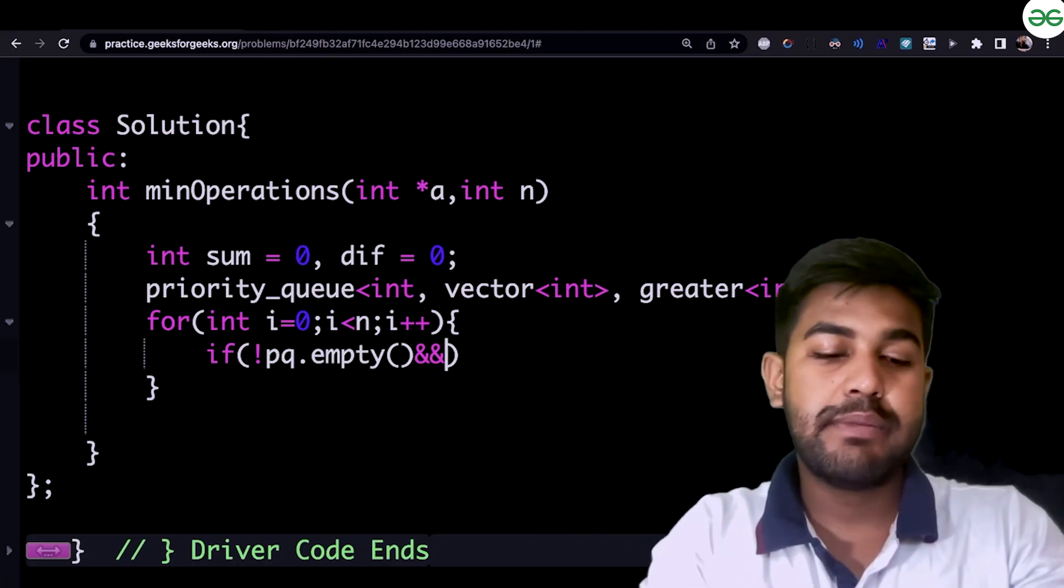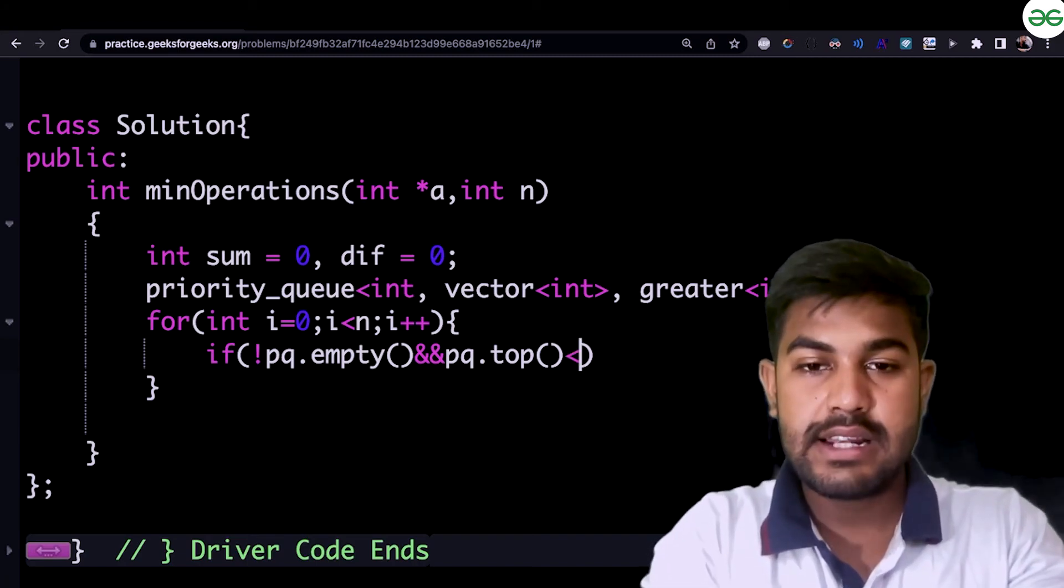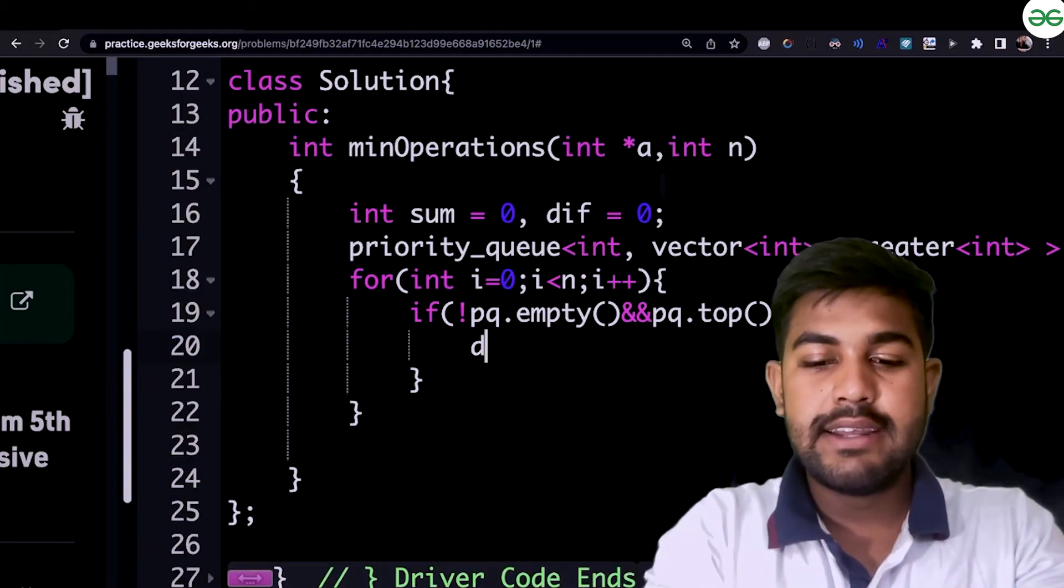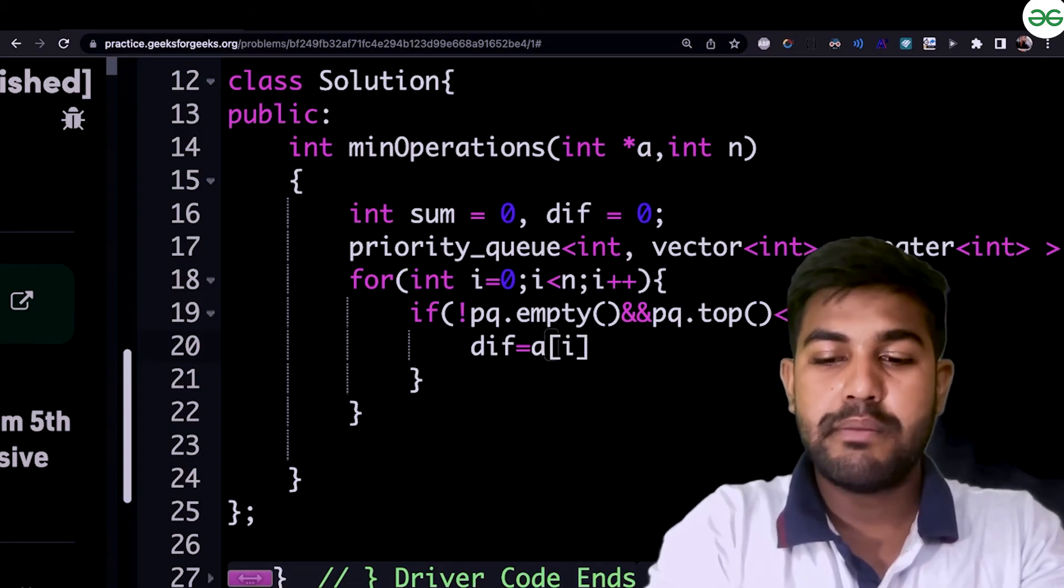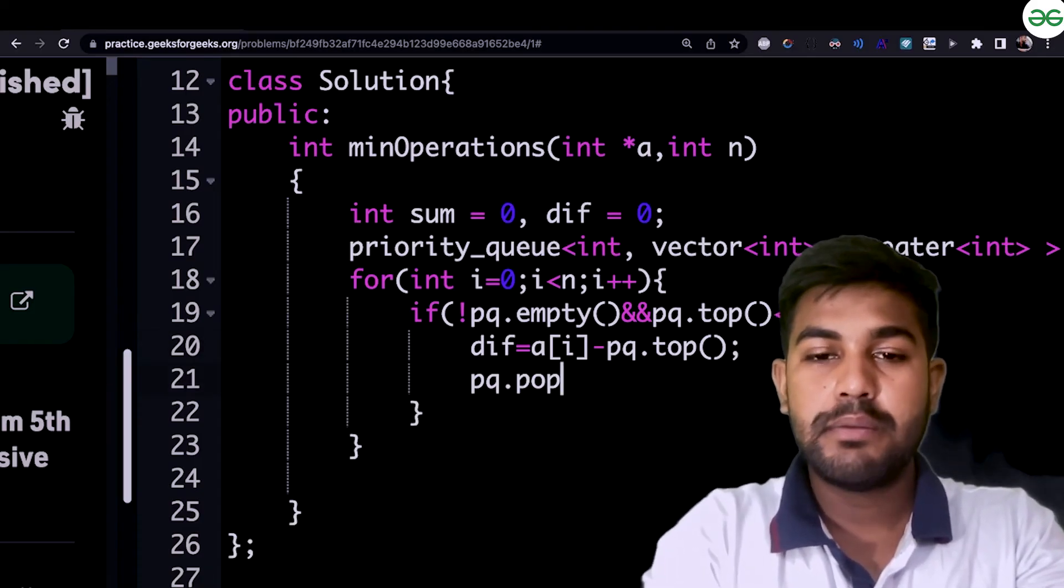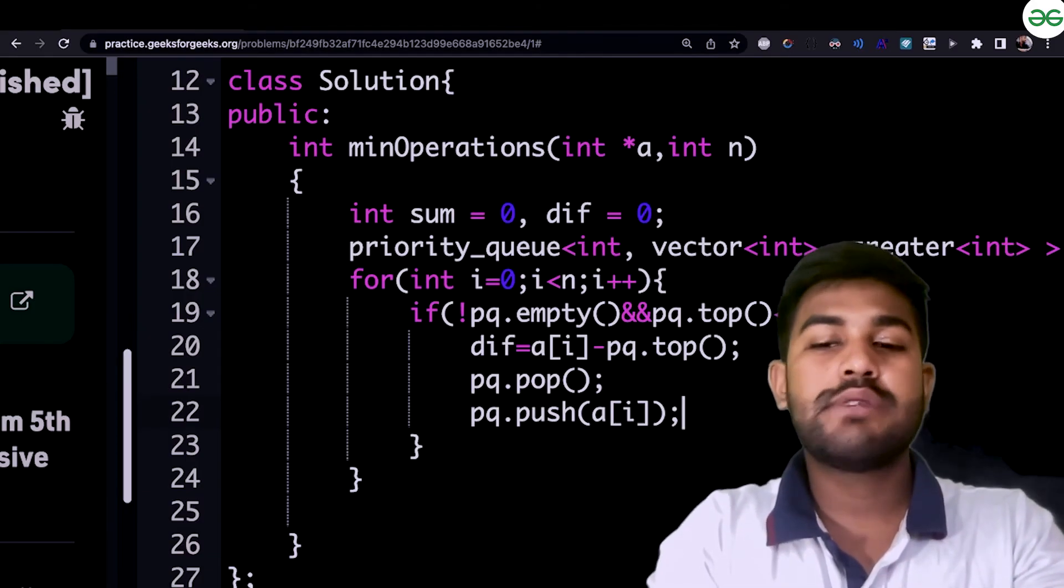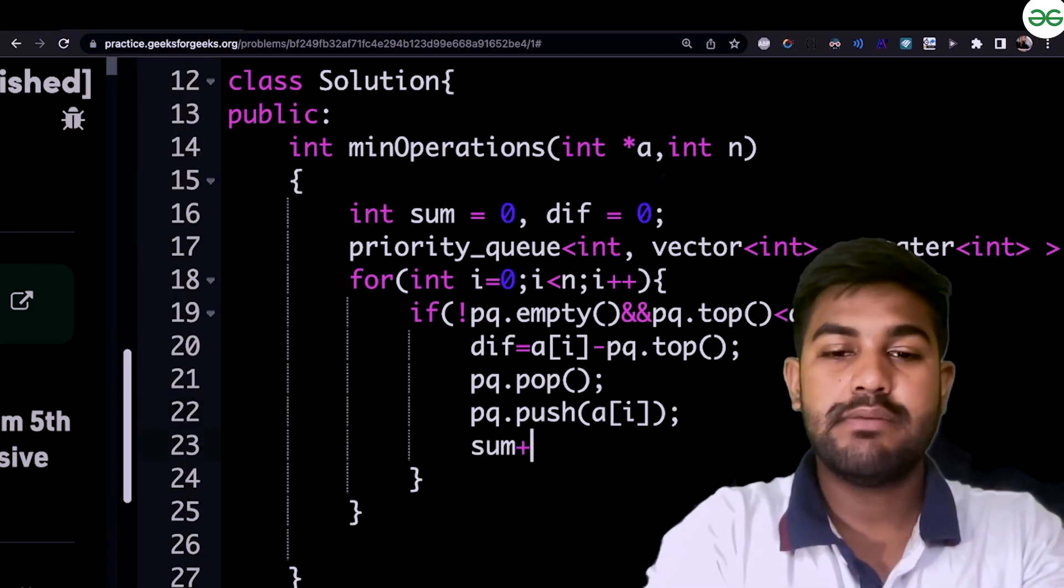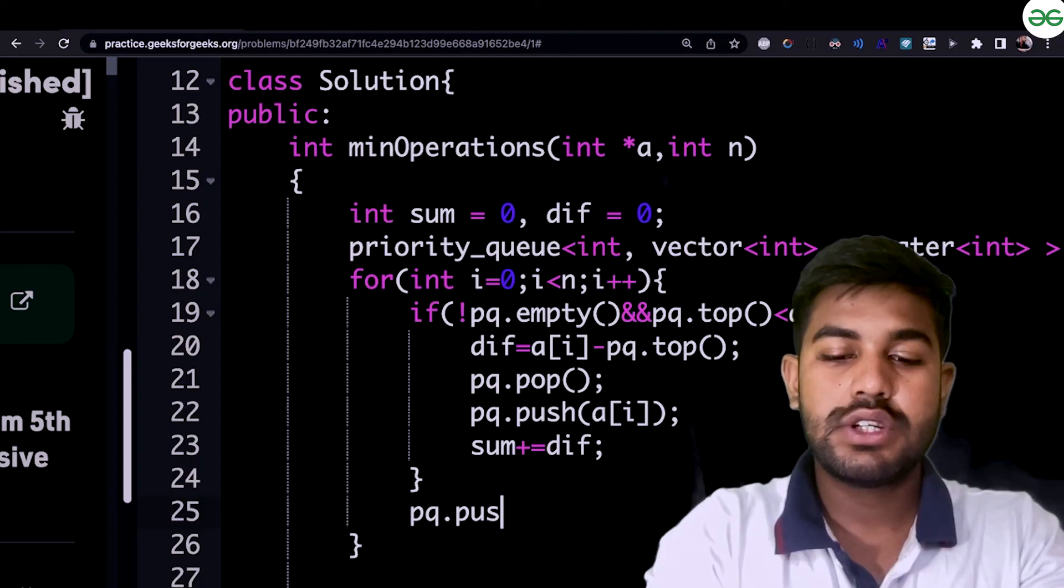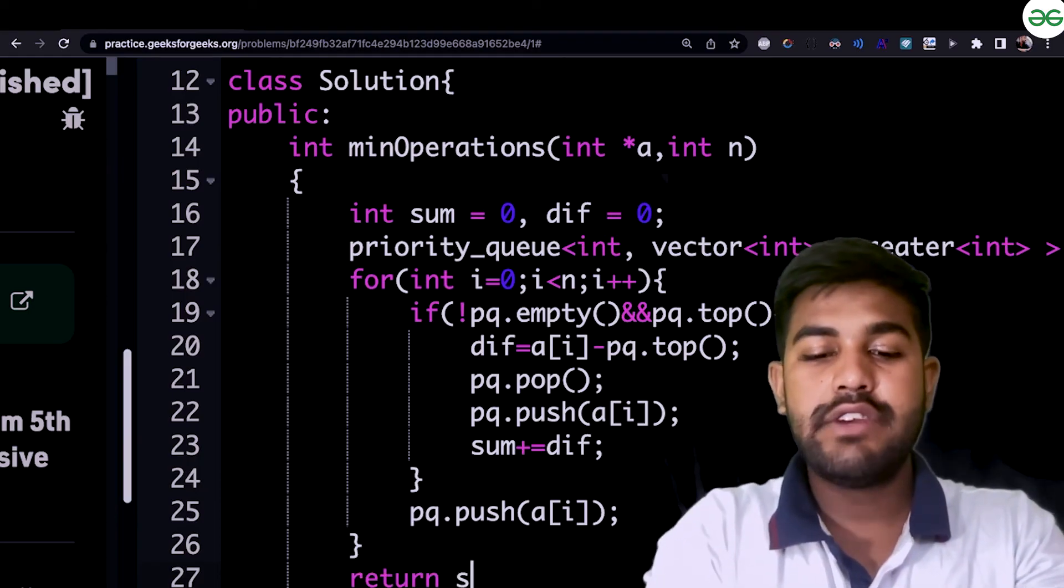So now the first check should be done is, suppose there is only one element. There is nothing to compare. So we would simply say that if the priority queue is not empty and suppose it has elements to compare and pq dot top element is less than a of i. Now what we would do is, difference equals a of i minus pq dot top element. Then we would pop because this work is done. Pop and then we would insert this also because the current element, because we might require it for future reference, because it might bring us less value. Now we would add the sum. And then what we would do is, again insert pq dot push. So whatever, even if this condition is not true, this if condition is not true, this would always run.